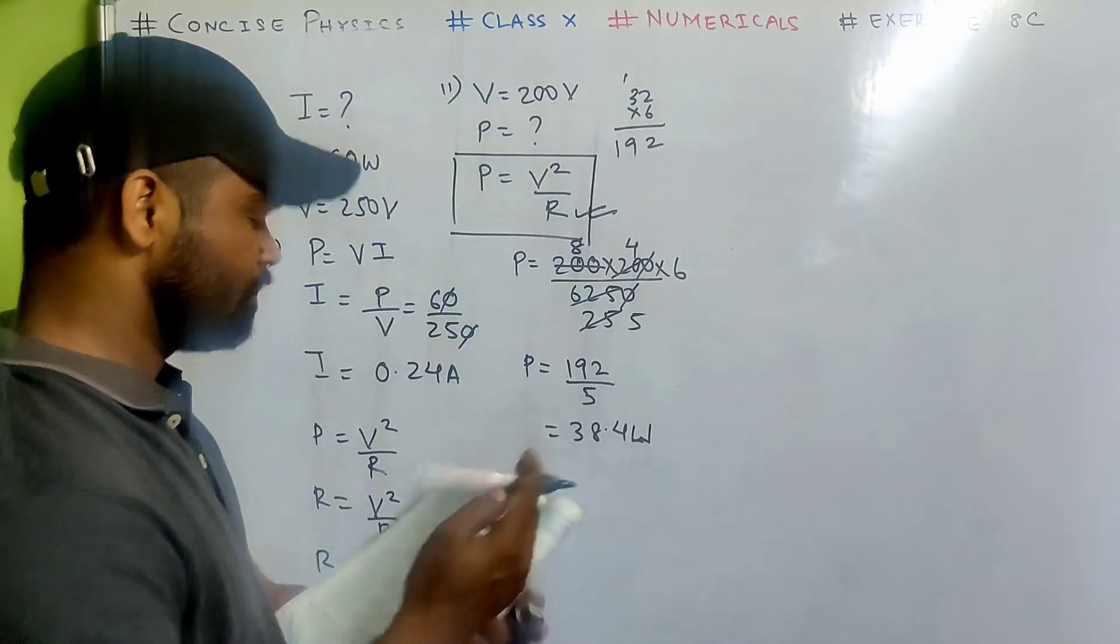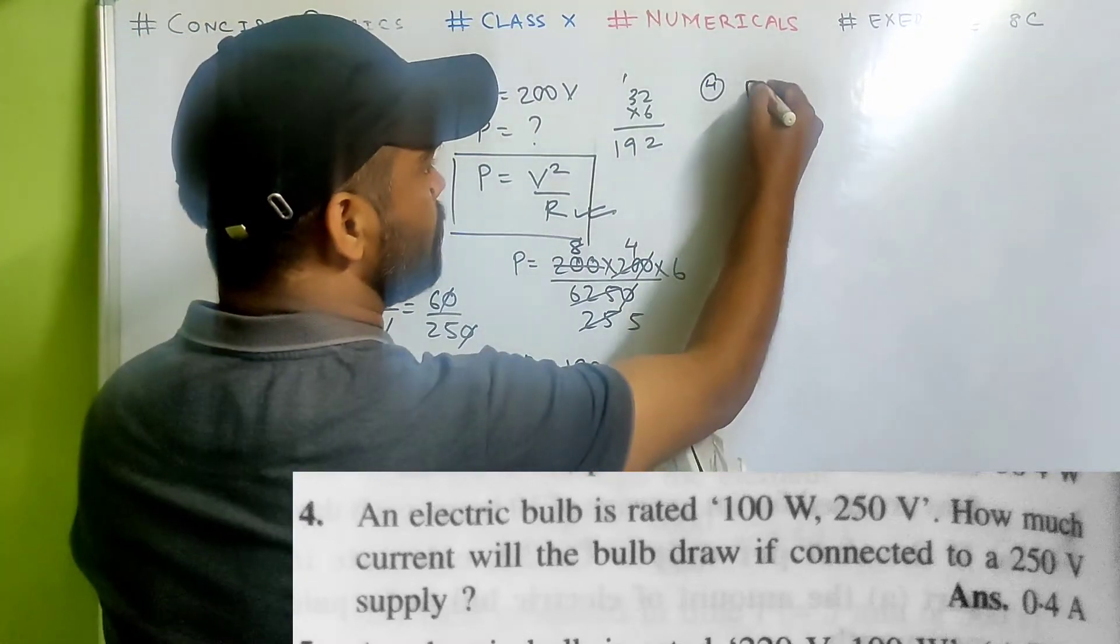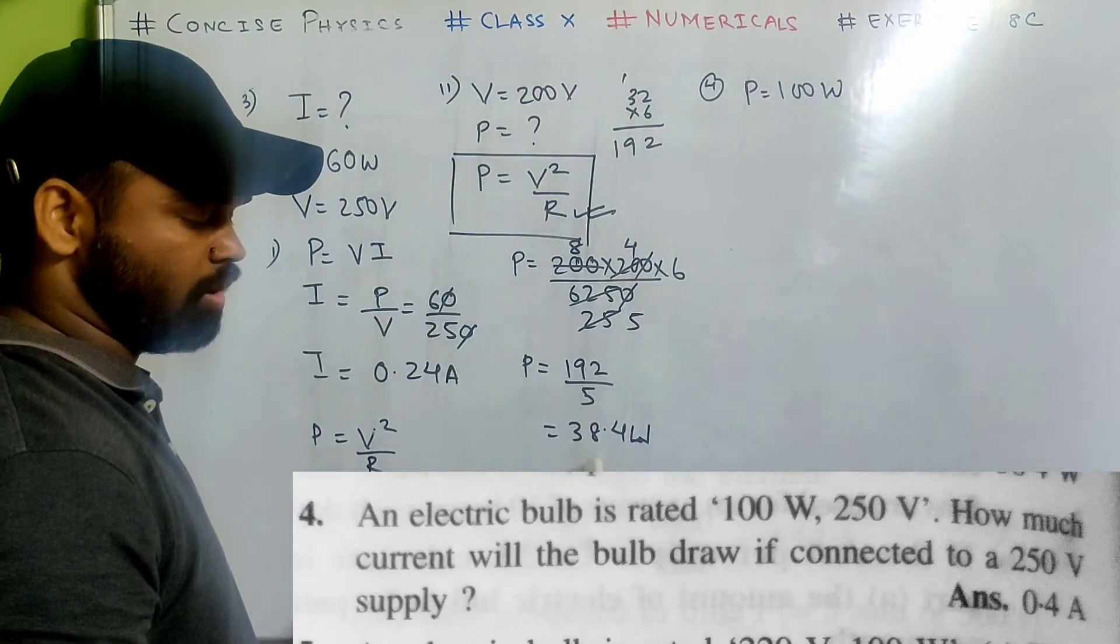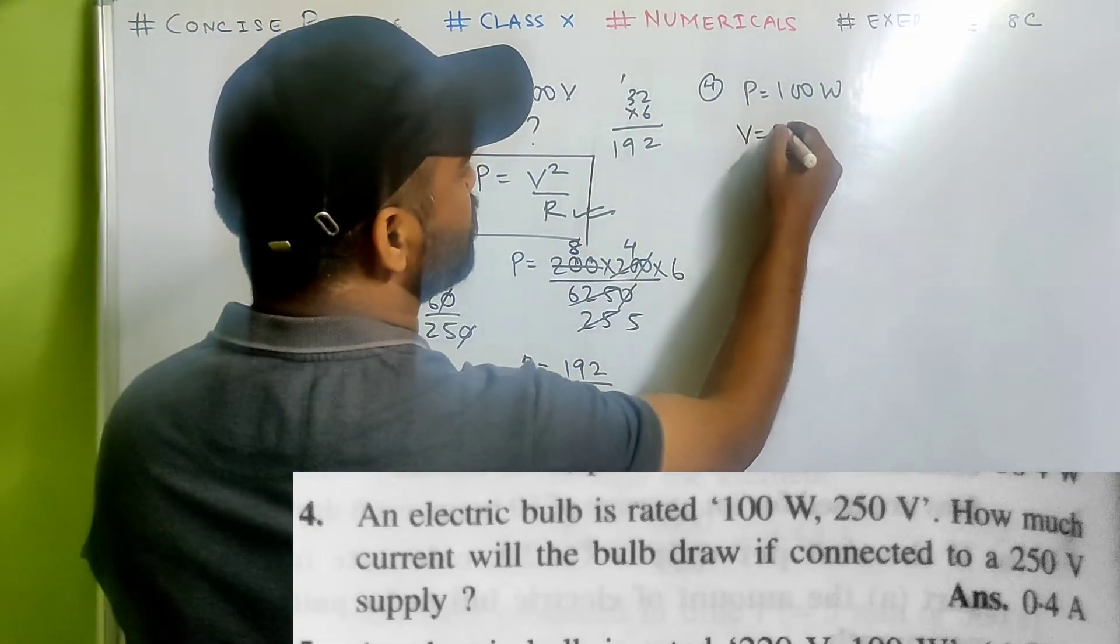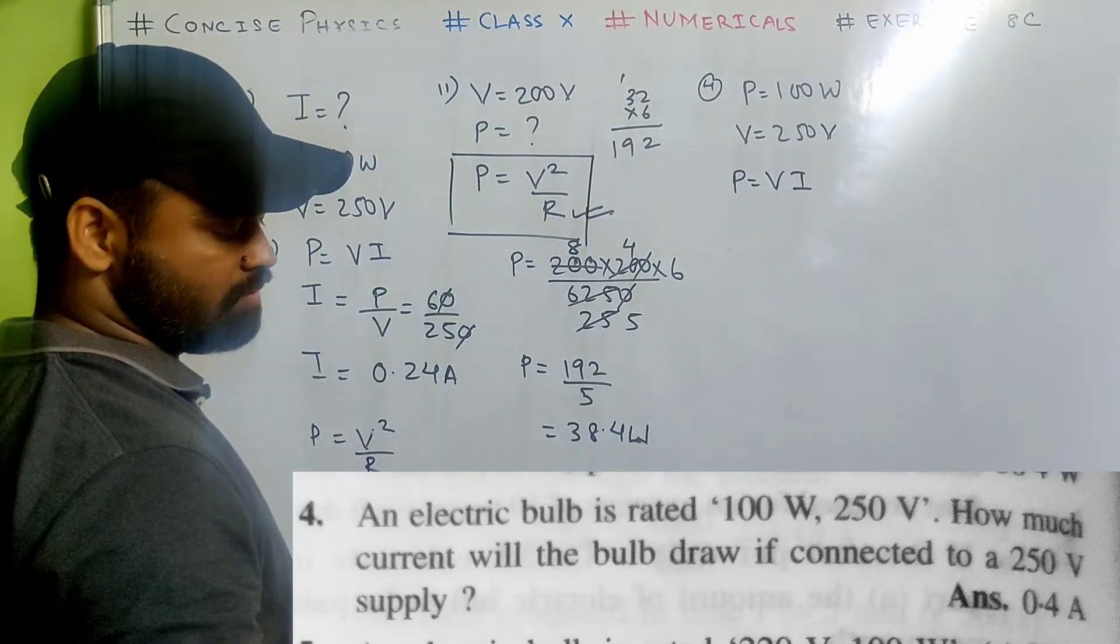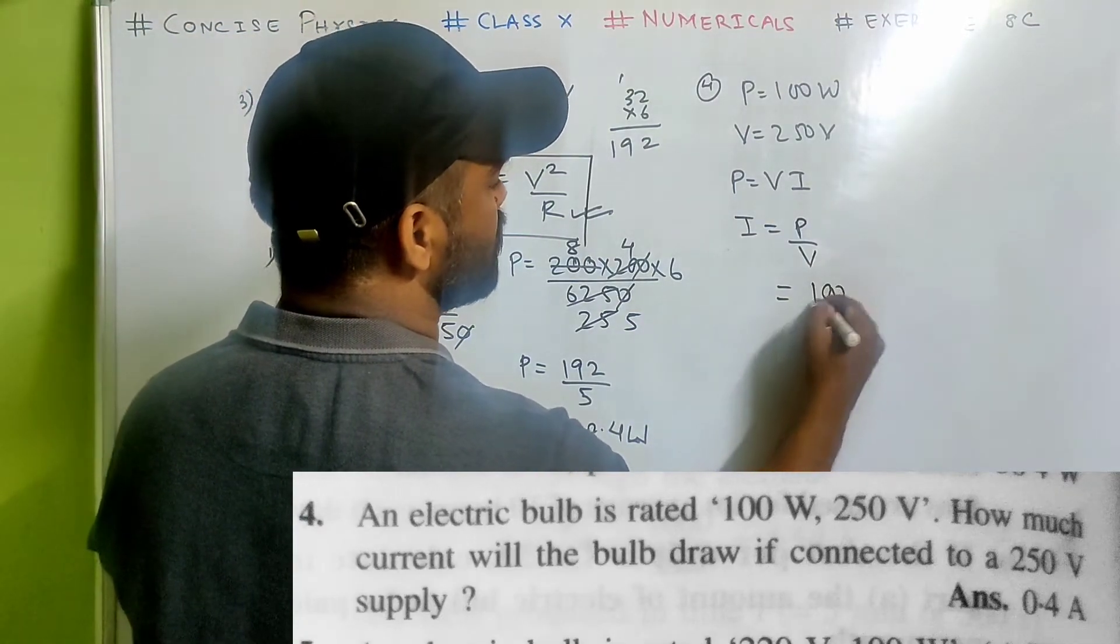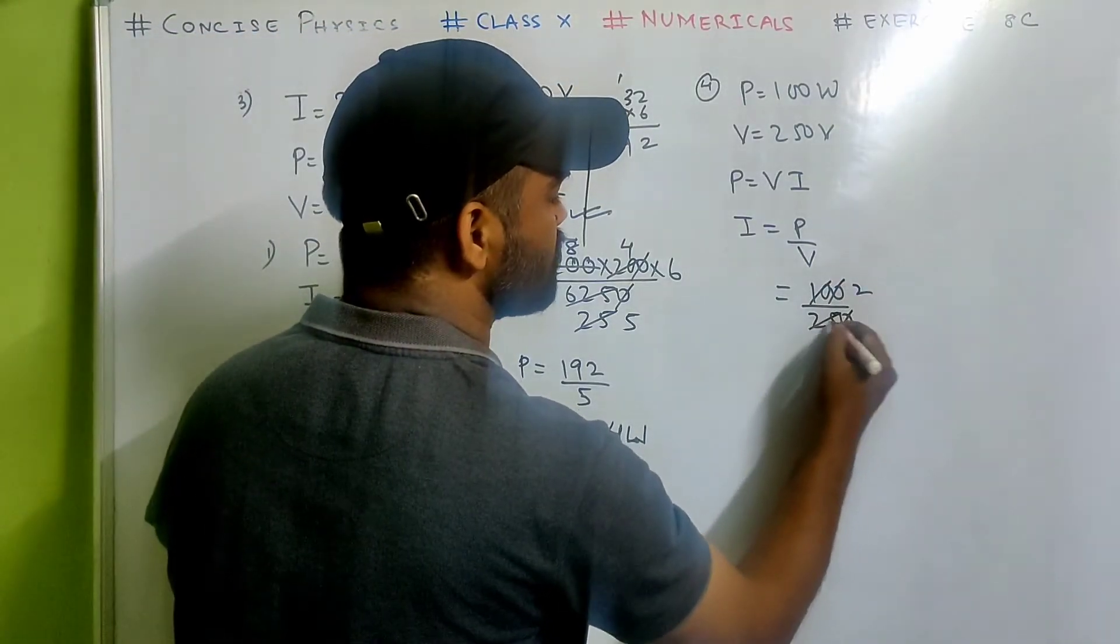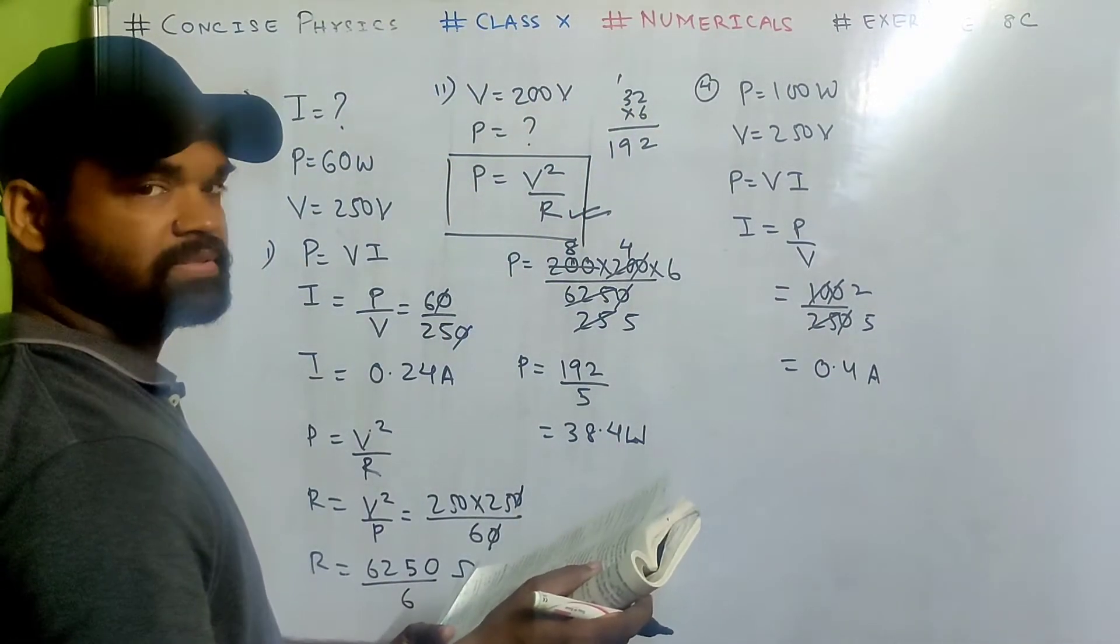Now look at number 4. An electric bulb is rated power 100 watt 250 volt. How much current will it draw if it is connected to 250 volt supply? Power equals to v i. They have asked for the current. So i will be p by v. That is 100 by 250. That's 0.4 ampere. That's your answer.